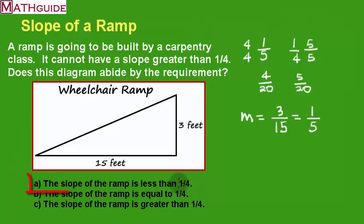So let's see, that would be A. The slope of the ramp is less than one-fourth. So give yourself a round of applause if you chose A.